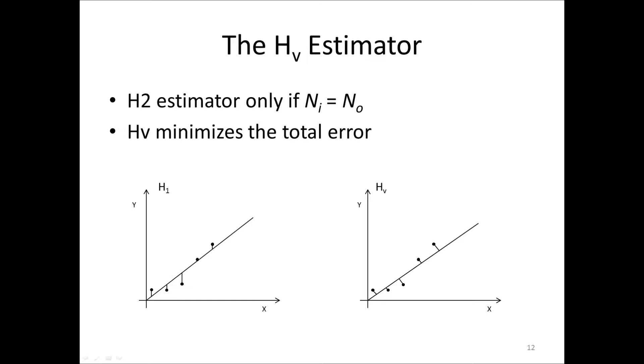The H2 estimator can easily be shown only to exist if the number of inputs equals the number of outputs, which is not often the case. So instead, we define another estimator called the Hv estimator, which is of larger interest. Hv minimizes the total error. So for noise on both the input and output, the H1 estimator minimizes the vertical distances as seen in the left plot here. The Hv estimator, on the other hand, minimizes the distances perpendicular to the line.